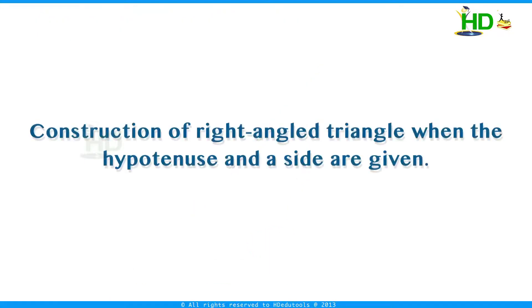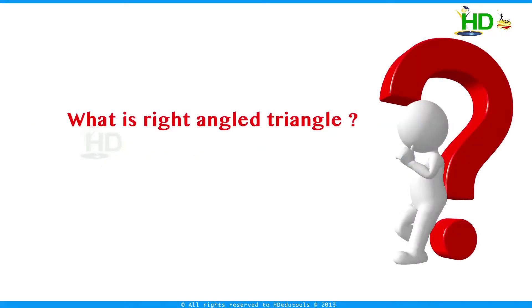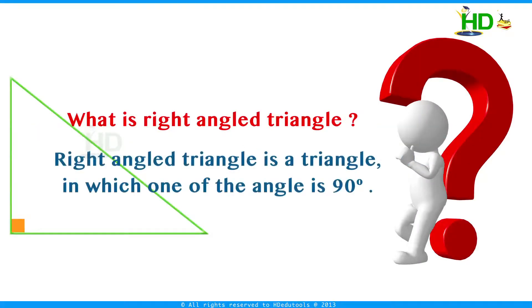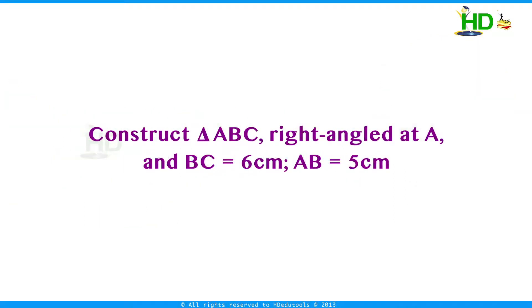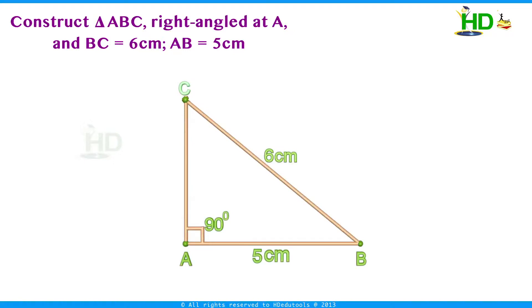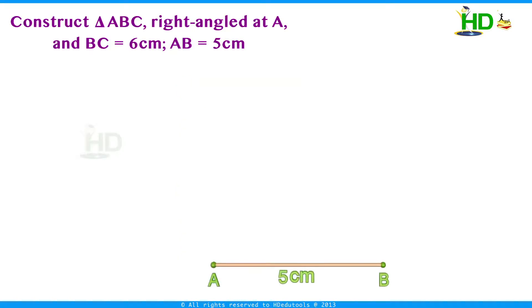Now we take another method of construction: a right angle triangle when the hypotenuse and a side are given. A right angle triangle is a triangle in which one of the angles is 90 degrees. We take this example: construct triangle ABC with right angle at A, BC = 6 cm, and AB = 5 cm. For this, first draw a line segment AB of length 5 cm.